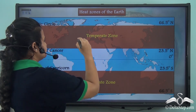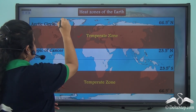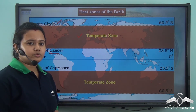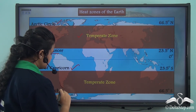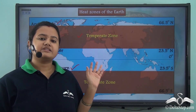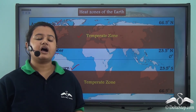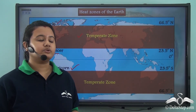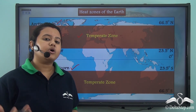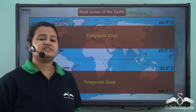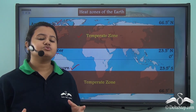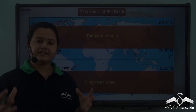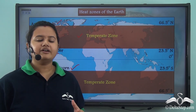The next heat zone is the temperate zone. The north temperate zone lies between the Arctic Circle and the Tropic of Cancer, while the south temperate zone lies between the Tropic of Capricorn and the Antarctic Circle. Unlike the tropical zone, the temperate zone does not receive the vertical rays of the sun but rather receives slanting rays. Due to this, the temperate zone experiences a moderate or mild climate — that is, warmer summers and cooler winters.